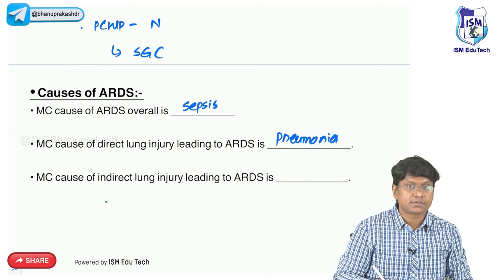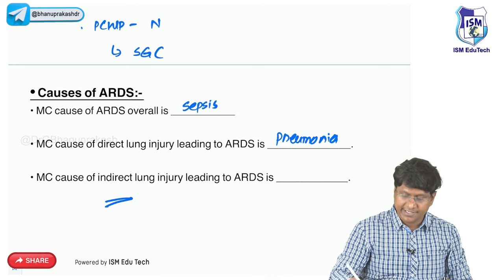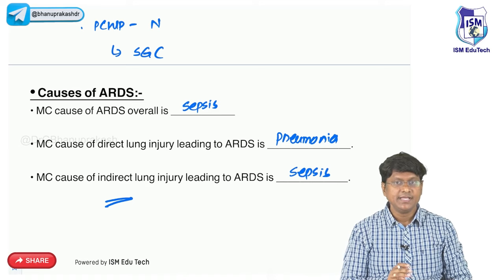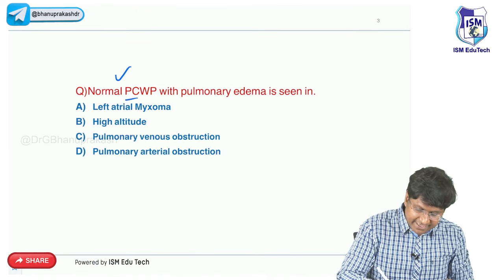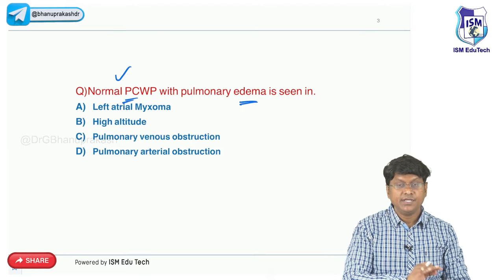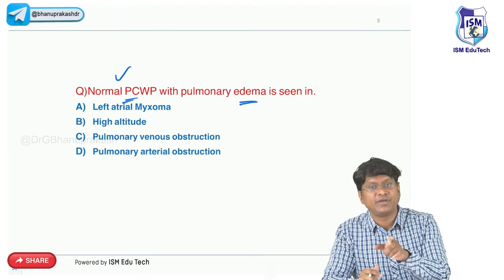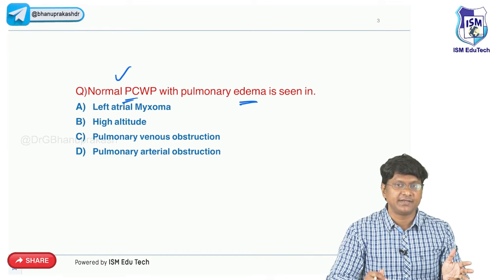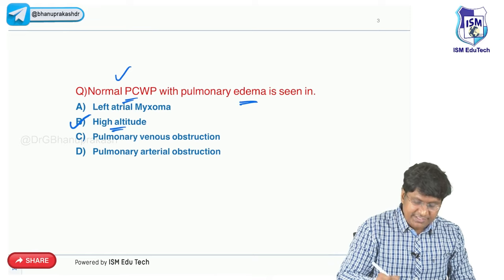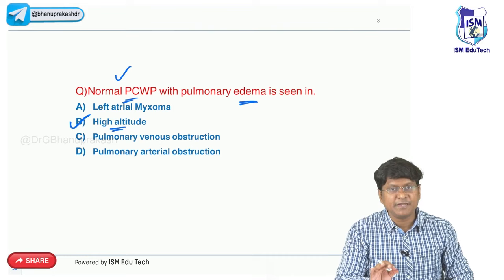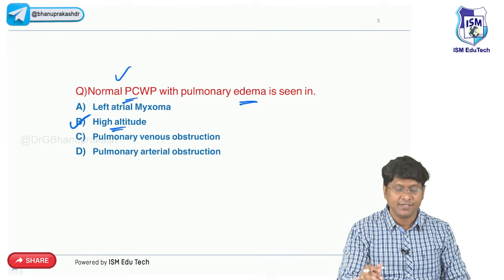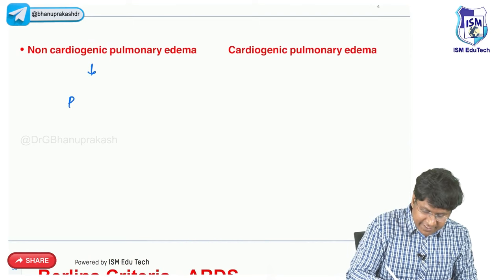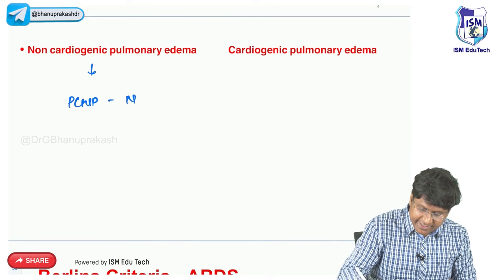The most common cause of indirect lung injury causing ARDS is sepsis again. Regarding a question about normal pulmonary capillary wedge pressure with pulmonary edema - among options like left atrial myxoma, high altitude, pulmonary venous obstruction, and pulmonary arterial obstruction - the one which can cause ARDS is high altitude. The difference between non-cardiogenic and cardiogenic pulmonary edema is the pulmonary capillary wedge pressure: normal in non-cardiogenic and elevated in cardiogenic.